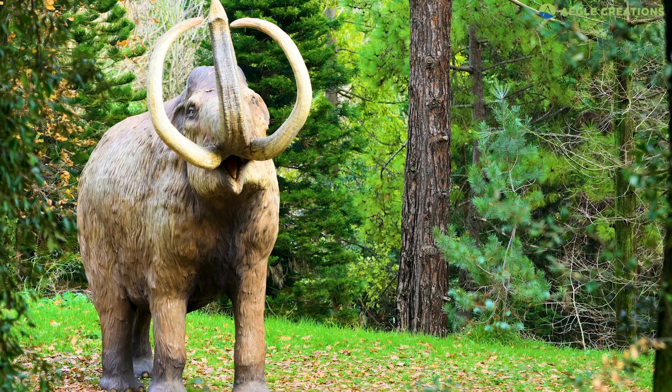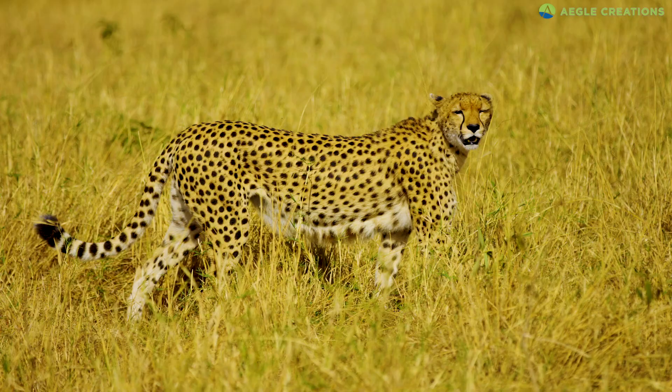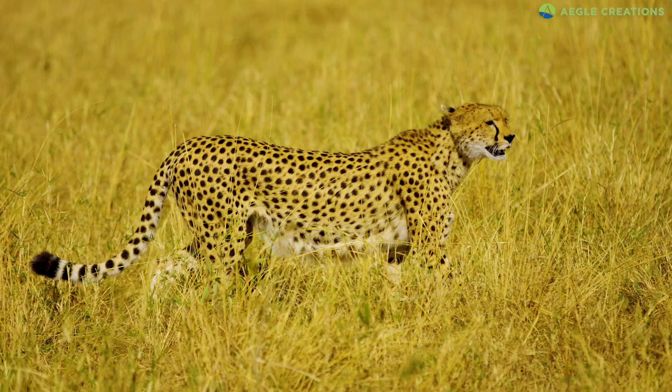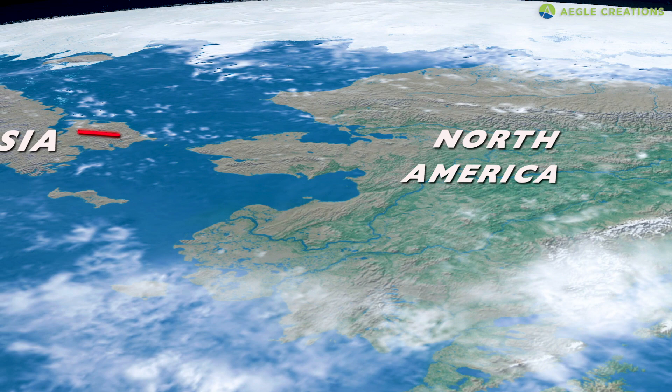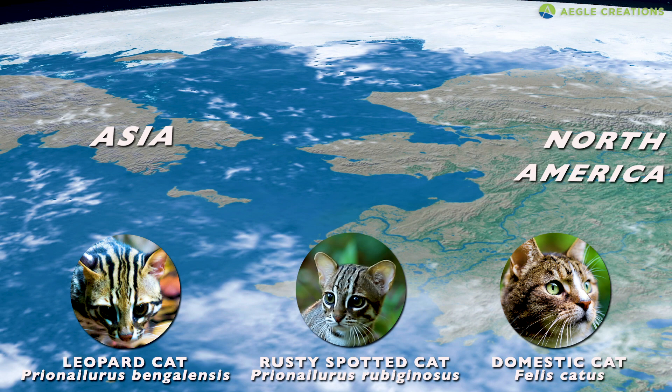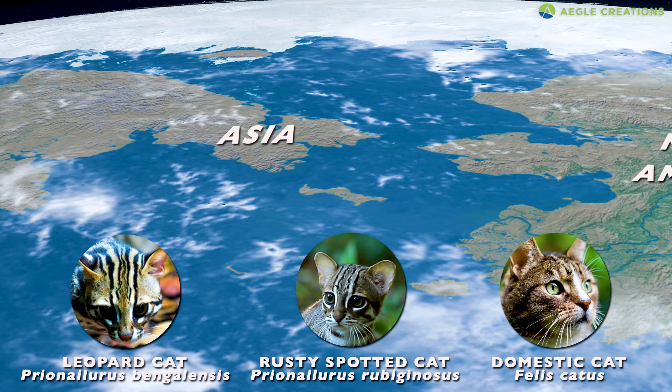However, animals like cheetahs managed to escape extinction because their ancestors crossed over to Asia when sea levels were low. During the same time, the progenitors of the leopard cat and domestic cat crossed from North America to Asia too. Thereafter, the leopard cat lineage produced smaller cat species in Asia, like the rusty spotted cat.